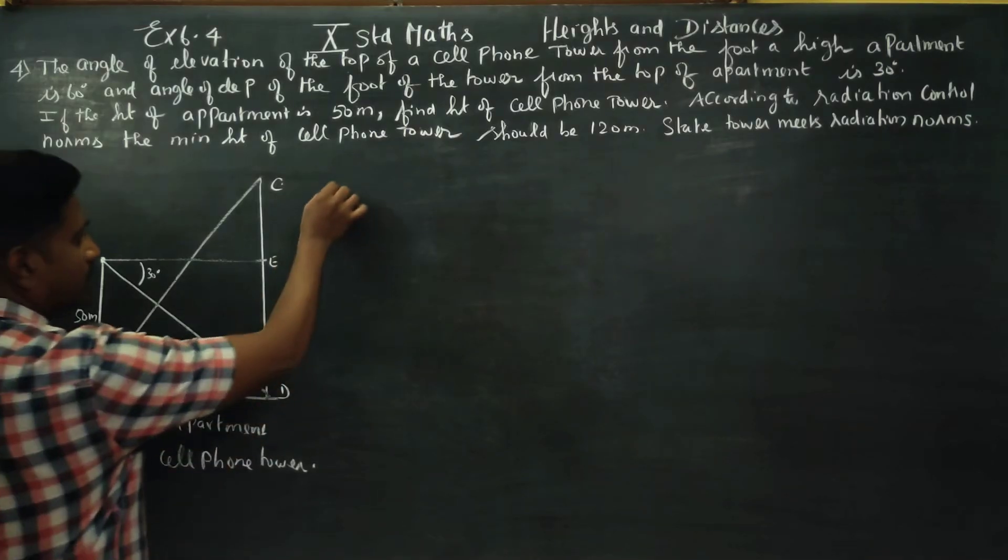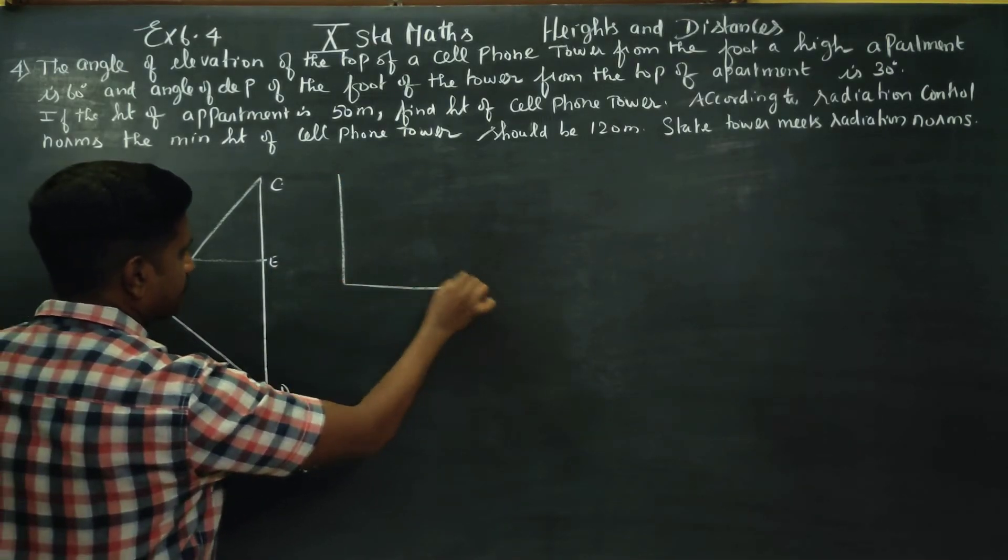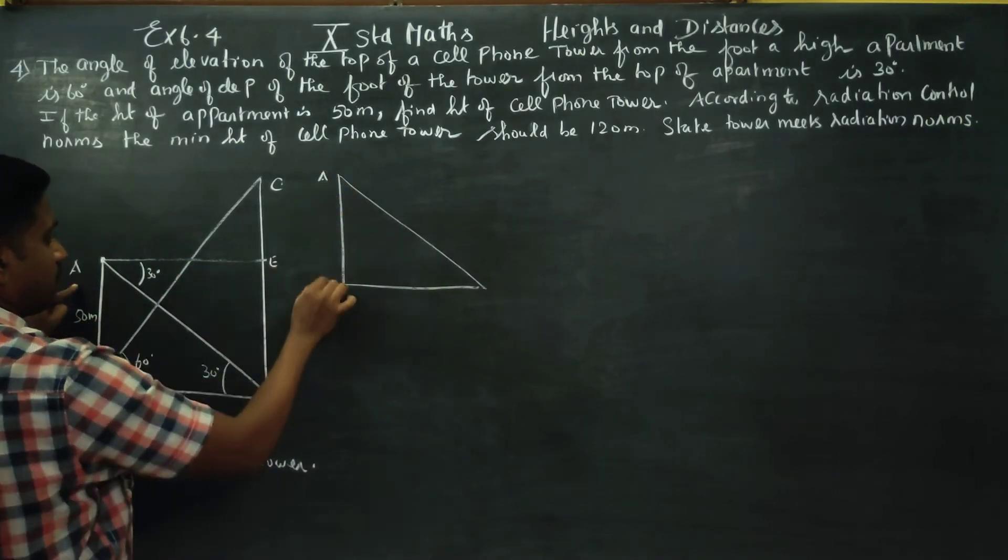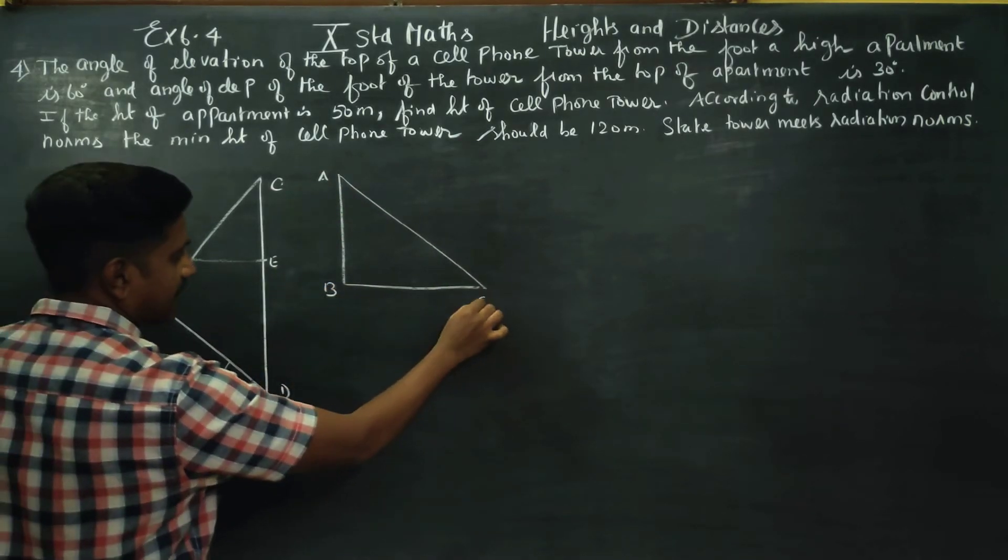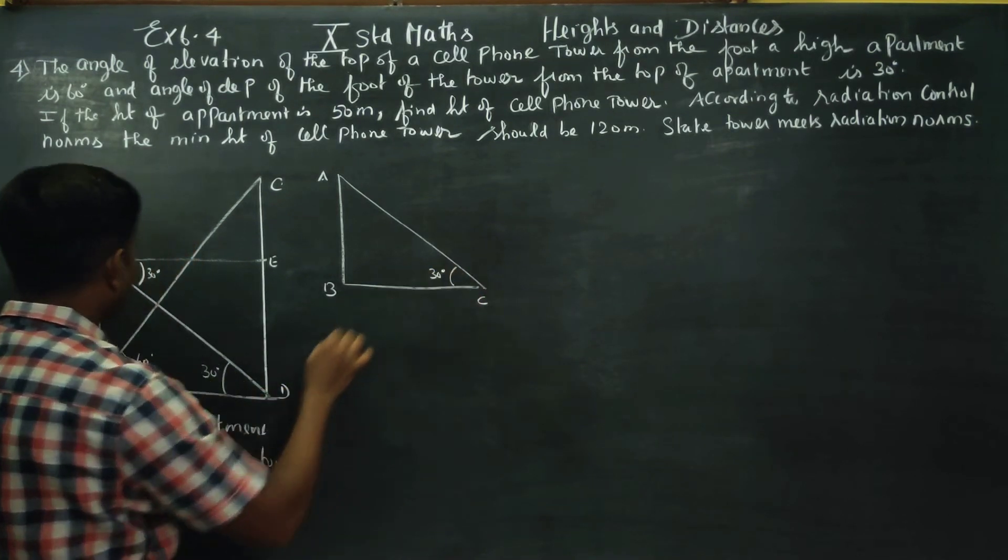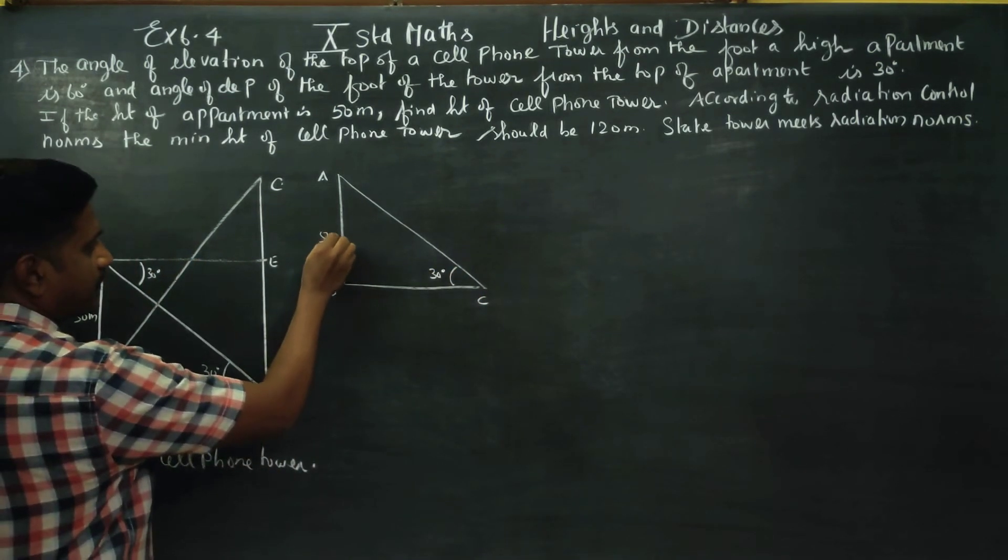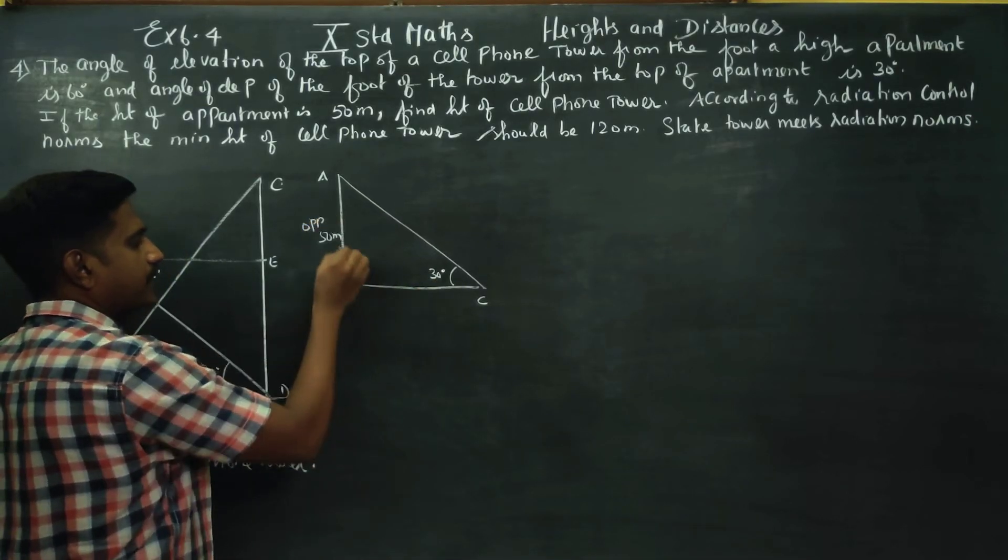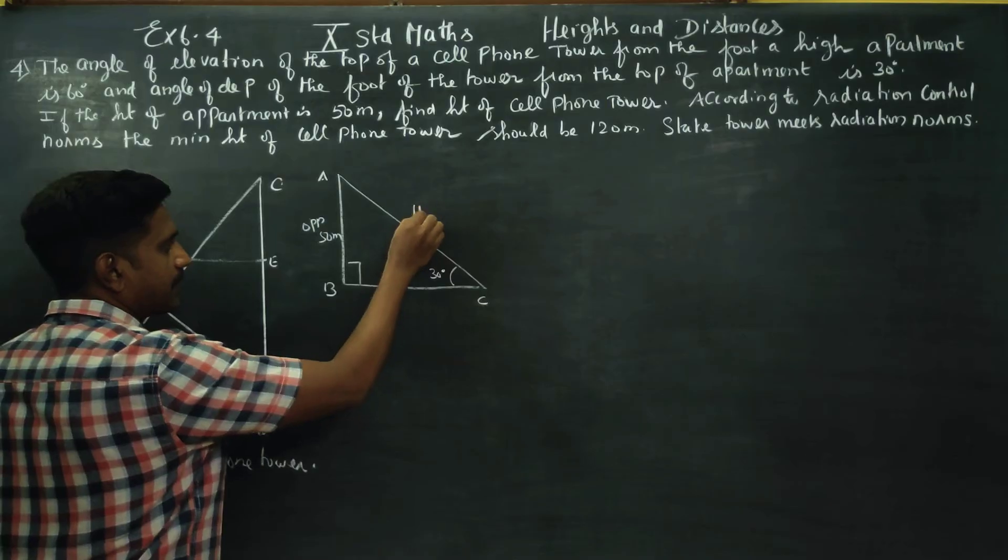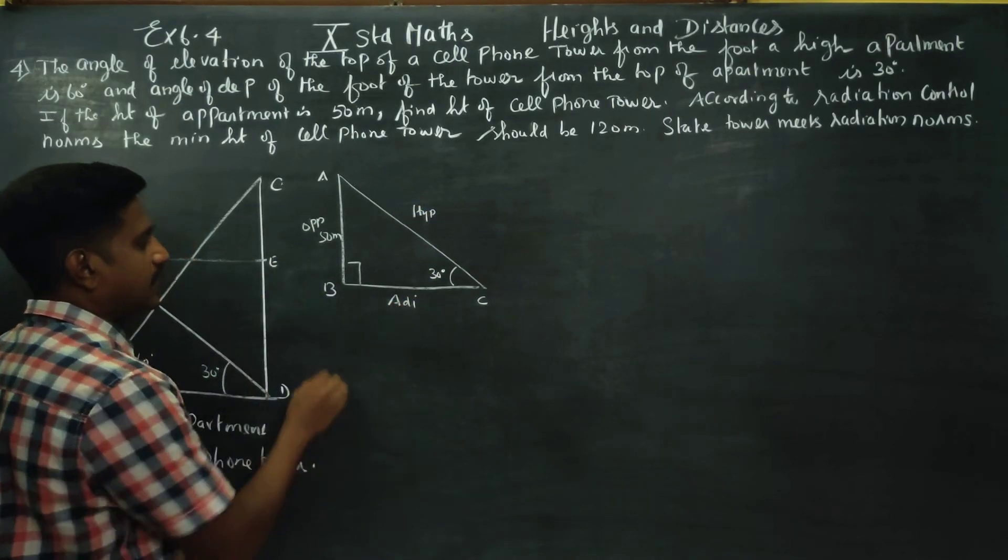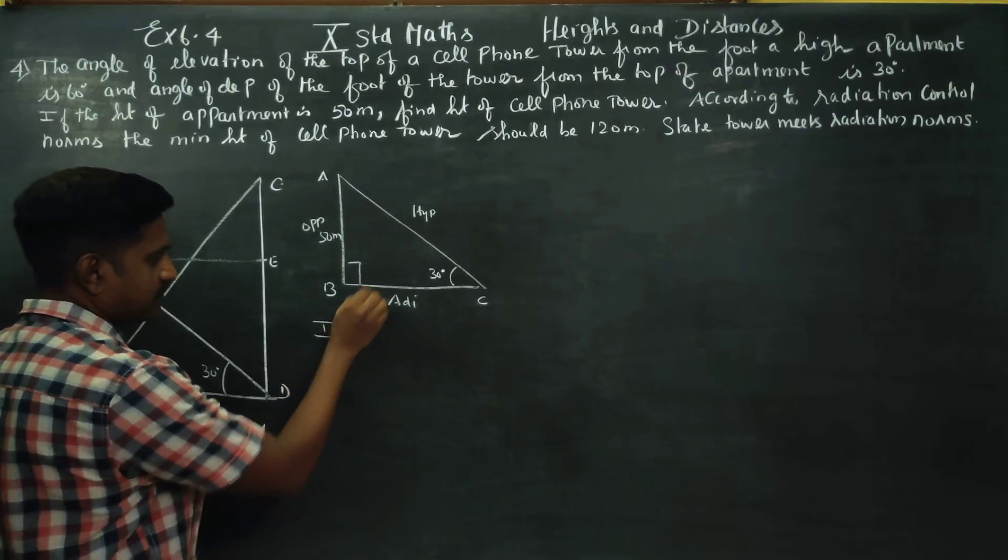First, I will tell you, this triangle ABC. This is 30 degrees. This apartment height is 50 meters. 90 is opposite, it is hypotenuse, and the adjacent. Now how to do this?